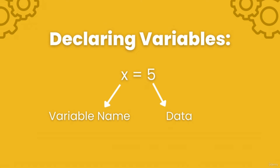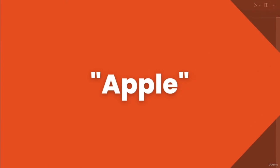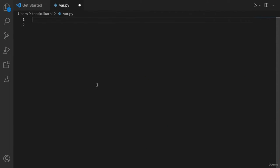You can store data such as numbers and texts in variables. To declare a variable, if I wanted to create a variable x and store the value 5, I would simply write x = 5. Yes, it's that simple — you write the variable name, write an equal sign, and write the data you want to store. Here's another example: if I wanted to store the text 'apple', I would create a variable fruit_name and store that text, so fruit_name = 'apple'. Calling on this variable would return apple.